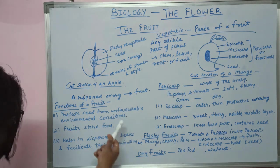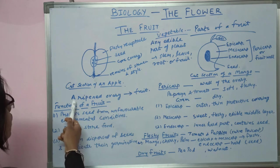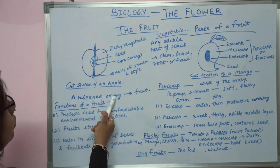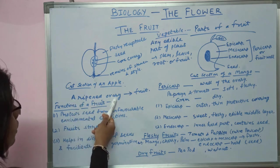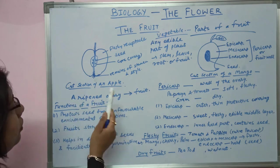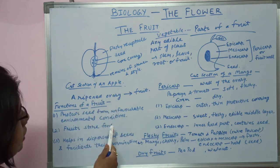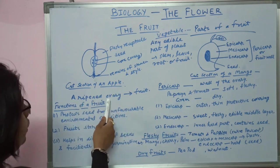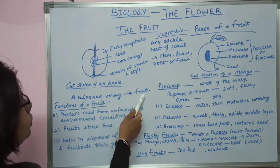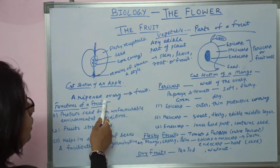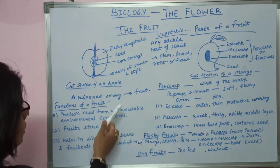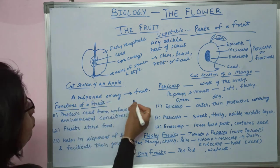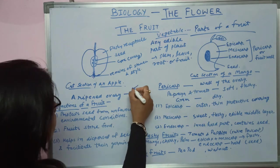Now, what is a fruit? A fruit is a ripe ovary. After fertilization, the ovary forms a fruit — it ripens, gets mature, and forms a fruit.